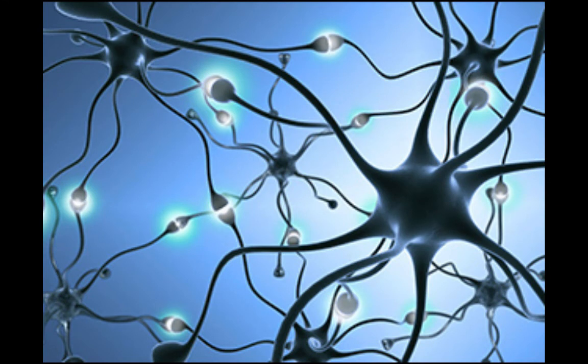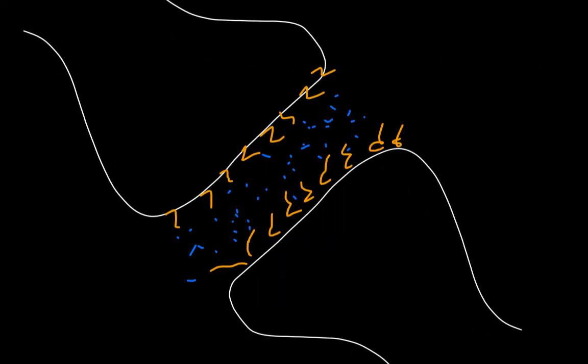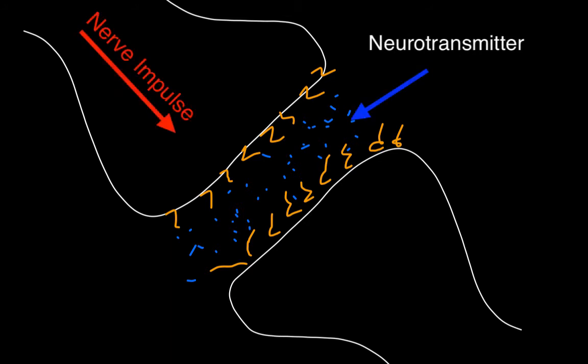You might think that every nerve is connected to each other, but they actually have a gap between each other called a synapse. The nerve impulses are transmitted between the neurons with special chemicals called neurotransmitters.